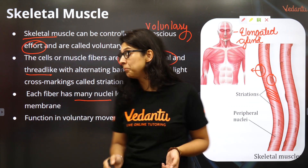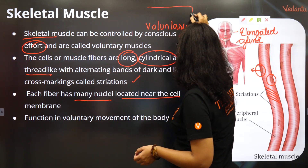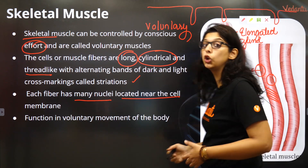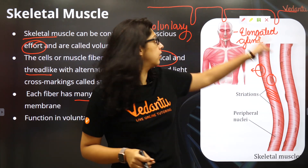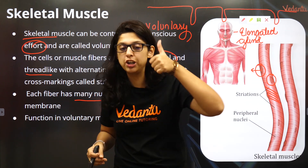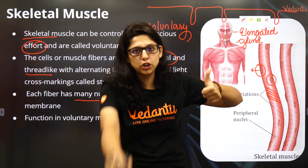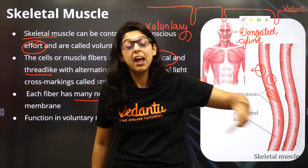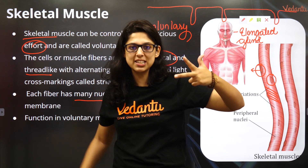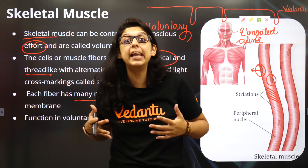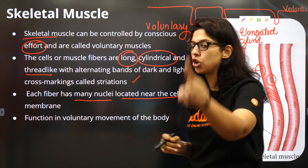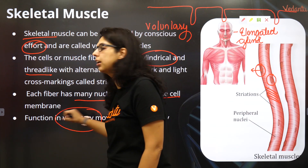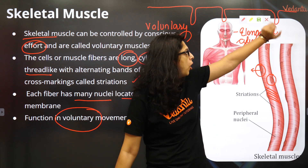The membrane of the muscle goes inside, and these are referred to as T-tubules. The endoplasmic reticulum of the skeletal muscle is called the sarcoplasmic reticulum. The cytoplasm of skeletal muscle is called the sarcoplasm, and the plasma membrane of the skeletal muscle is called the sarcolemma. So much information in one bio bomb! It functions for voluntarily controlling the movement of the body.